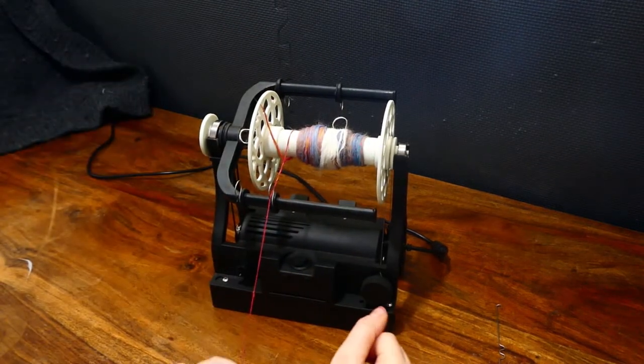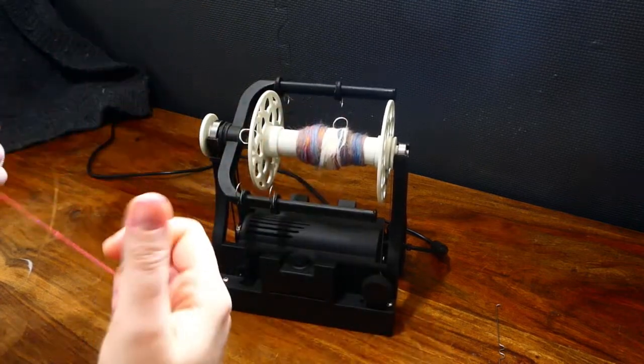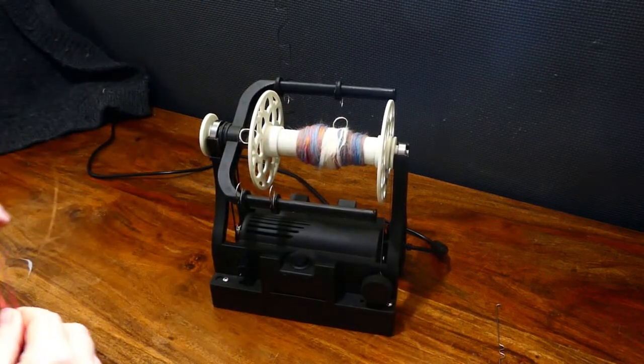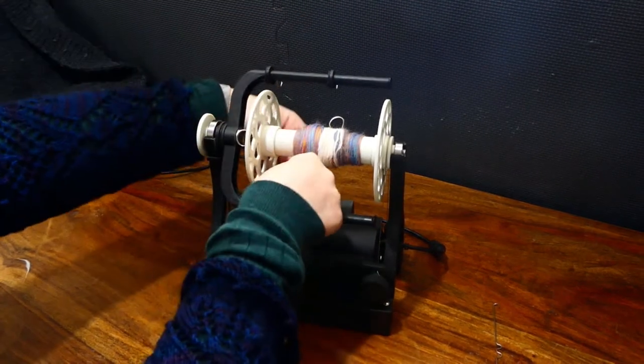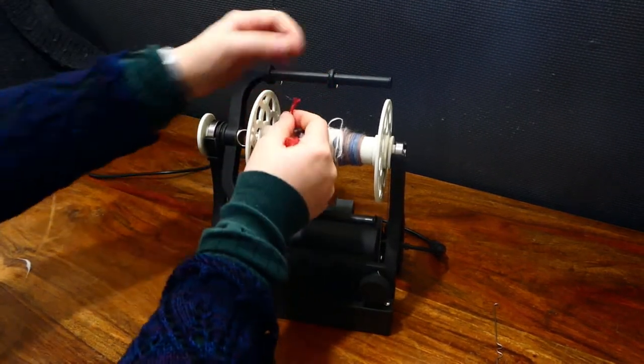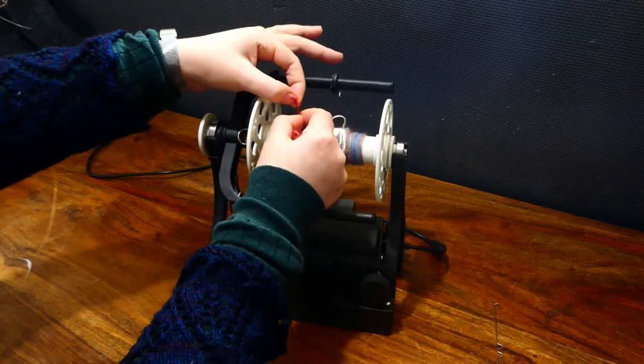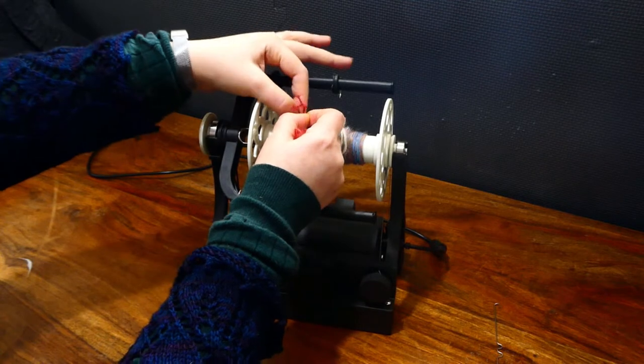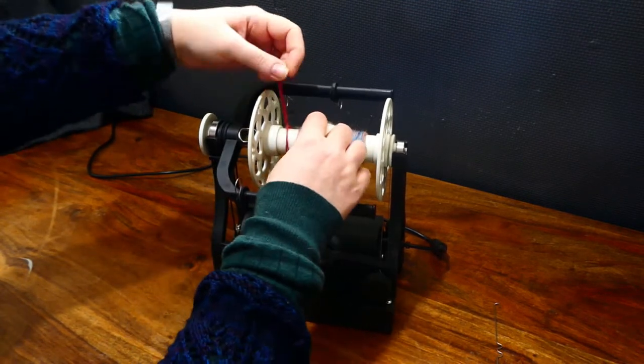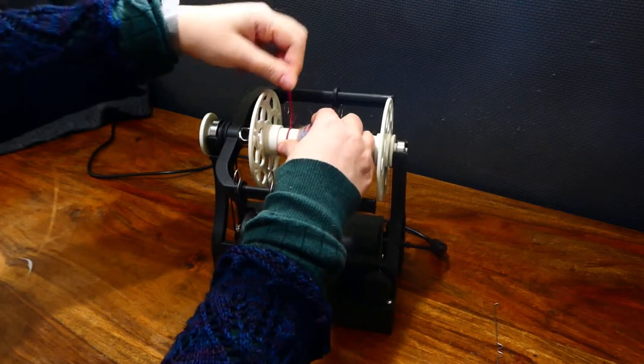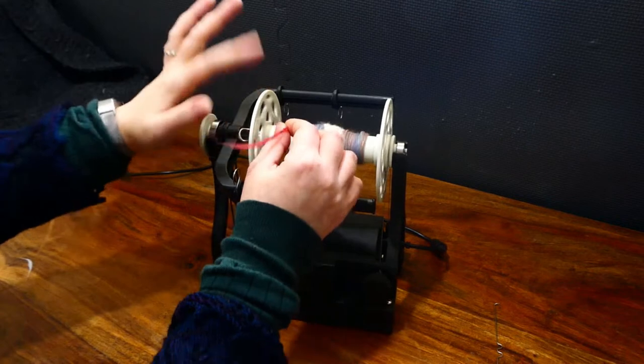A good way to do it is how I showed you in the Getting Started videos to make a lark's head knot. That is, you get a loop of yarn, put your loop around the bobbin, and pass the ends through. And then if you give that a good yank backwards against itself, that's going to stay stuck.